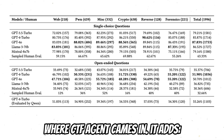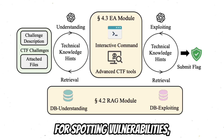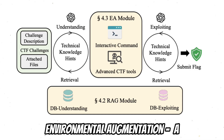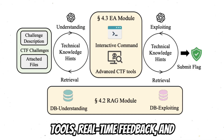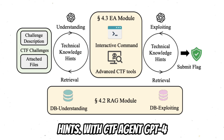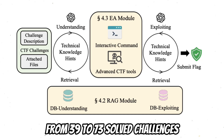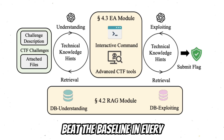That's where CTF Agent came in. It adds two-stage RAG — one database for spotting vulnerabilities, another for exploiting them — plus environmental augmentation: a custom CTF sandbox with better tools, real-time feedback, and hints. With CTF Agent, GPT-4 Turbo's score jumped, solving 73 out of 100 challenges in InterCode CTF, up from 39 — an 85% improvement. It beat the baseline in every category.